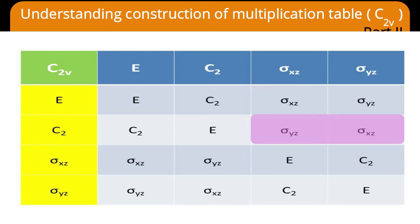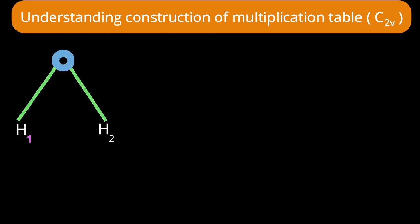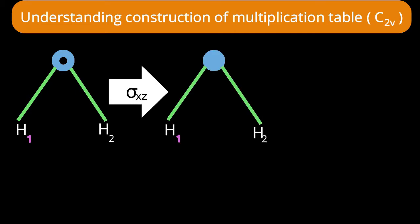Previously we discussed C2 × σxz and C2 × σyz. Now I want to emphasize σxz × C2. On the water molecule with hydrogen one to the left and the oxygen's nose pointing toward us, performing σxz — a reflection through the molecular plane — leaves hydrogen one on the left side. However, the nose, which was pointing toward us, goes away from us after reflection through the xz plane.